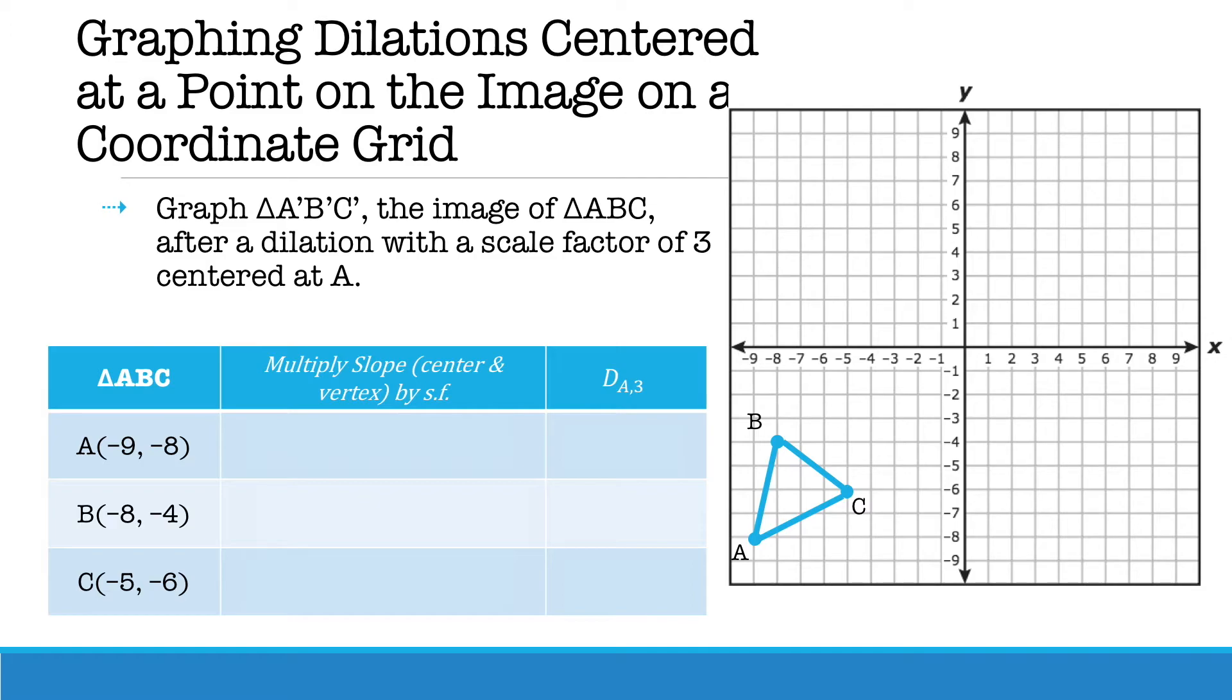Now let's take a look if we were to graph a dilation centered at a point on the image on a coordinate grid. For this specific case we are going to graph triangle A'B'C' after a dilation of a scale factor of 3 centered at A. Because A is our center point A' is actually going to stay exactly where it is. A' and A will be the exact same coordinate.